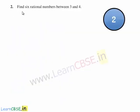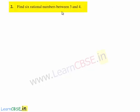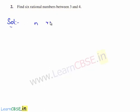Now let us move on to the second question in the exercise. The second question is: find 6 rational numbers between 3 and 4. Here we need to find 6 rational numbers between 3 and 4. When we need to find n rational numbers between 2 integers, we need to express the rational numbers with denominator as n plus 1.